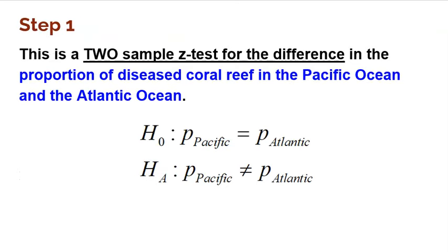So step one, you got to name the test. This is a two-sample z-test for the difference in the proportion of diseased coral reef in the Pacific Ocean and the Atlantic Ocean. The null hypothesis is always that those two population proportions are the same, they are not different whatsoever, they are equal - proportion from the Pacific, proportion from the Atlantic, the same. And the alternative is either less than, greater than, or not equal to. But he specifically just said he just wanted to know is there a difference, never said Pacific was higher or lower.